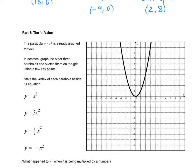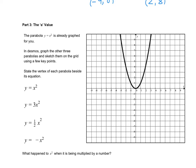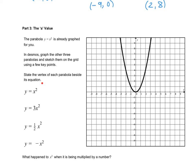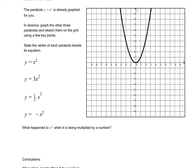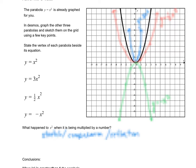Let's try our last value in vertex form: the a value. I have y equals x squared already on the grid. I want you to sketch three x squared, one half x squared, and negative x squared using Desmos, then make some observations and come back. For y equals 3x squared, the parabola has been stretched upwards — it's thinner. For y equals one half x squared, the parabola has been squished down, flattened out — we call that a compression. For y equals negative x squared, it has been reflected over the x-axis, like a mirror image.